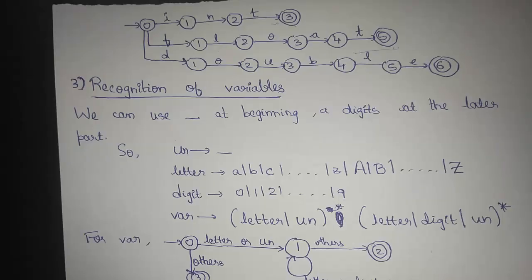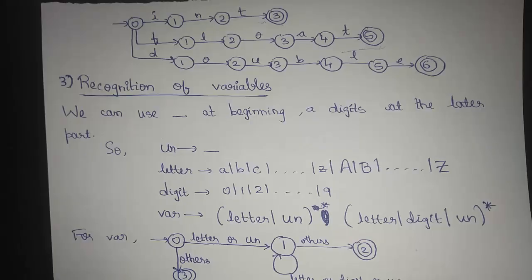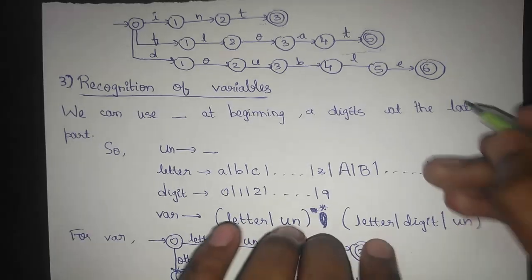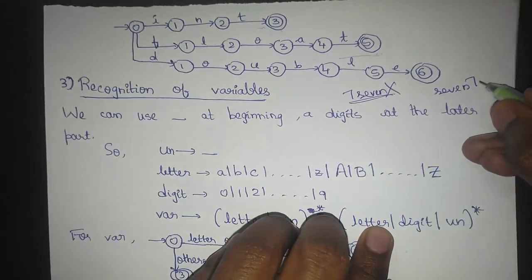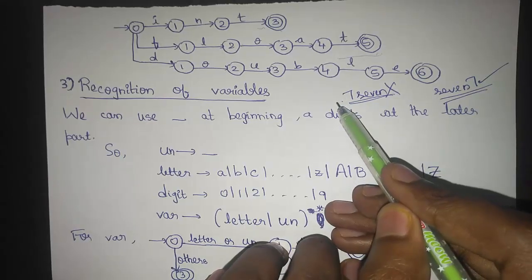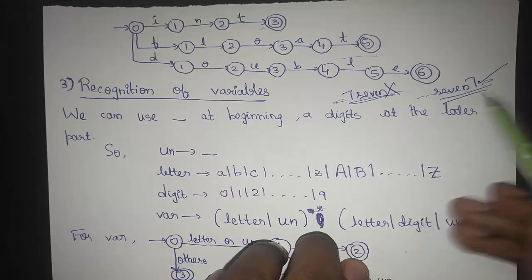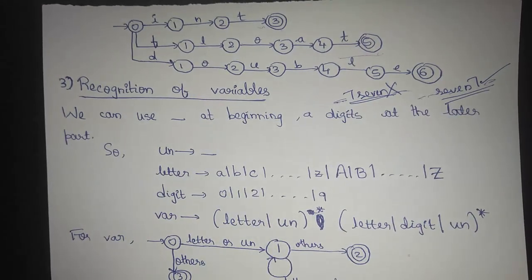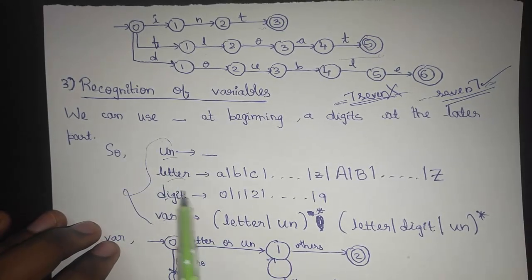The next one is recognition of variables, which is another form of token. Variables have naming nomenclature rules — the most important rule is that we can never start a variable name with a digit. A variable can be named 'SEVEN7' but it cannot start with a digit like '7SEVEN'. We can also use underscores anywhere — at the beginning, at the end, or somewhere in the middle. This forms a regular definition where each individual part has a regular expression.